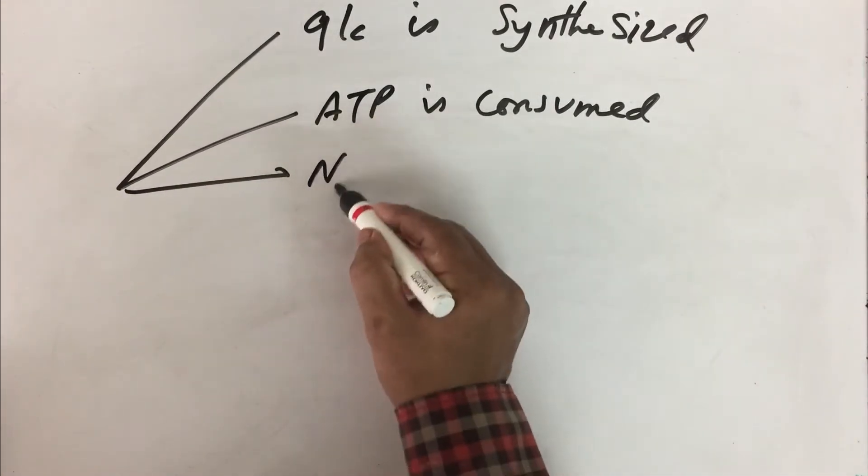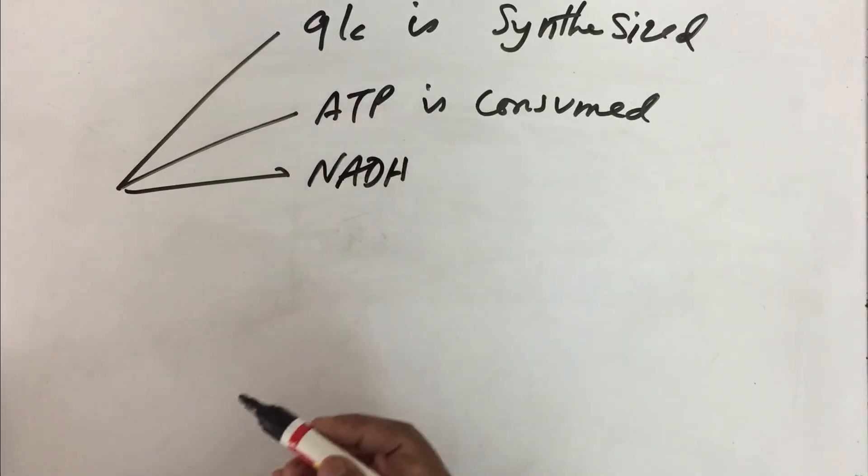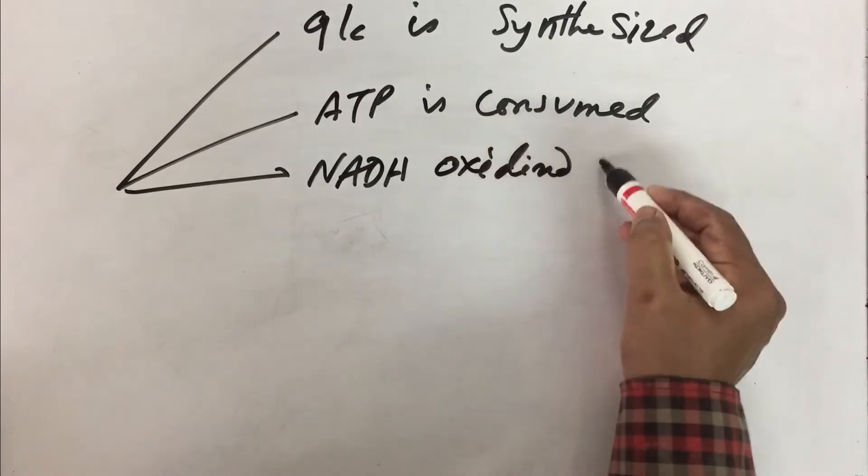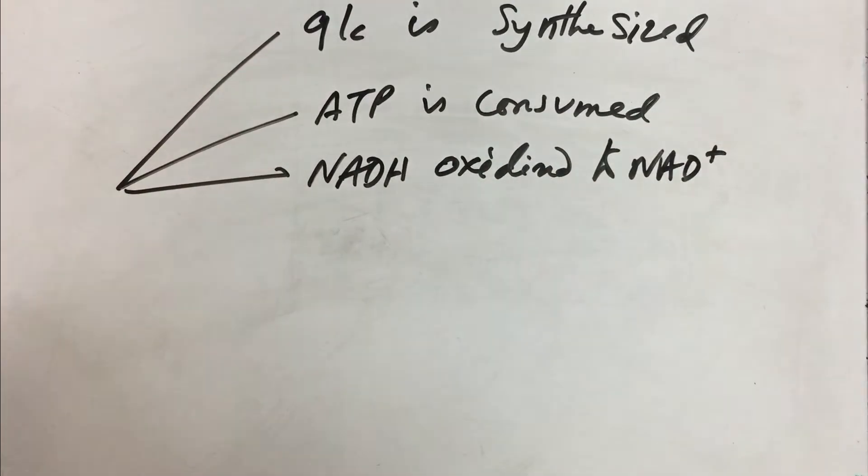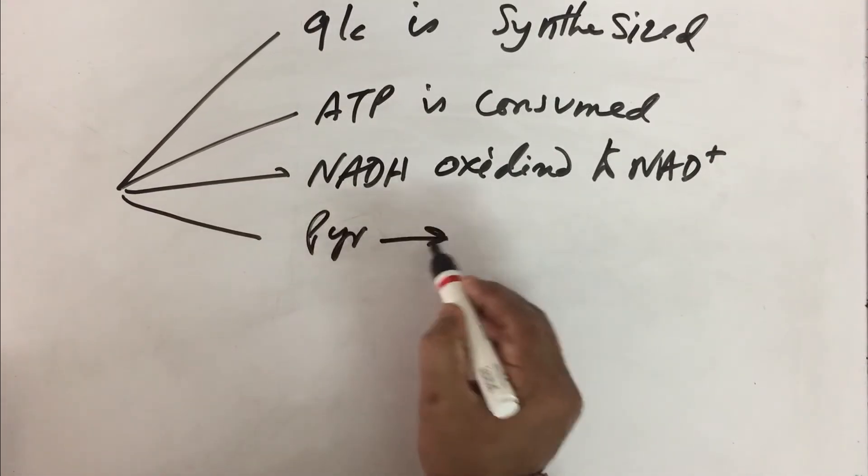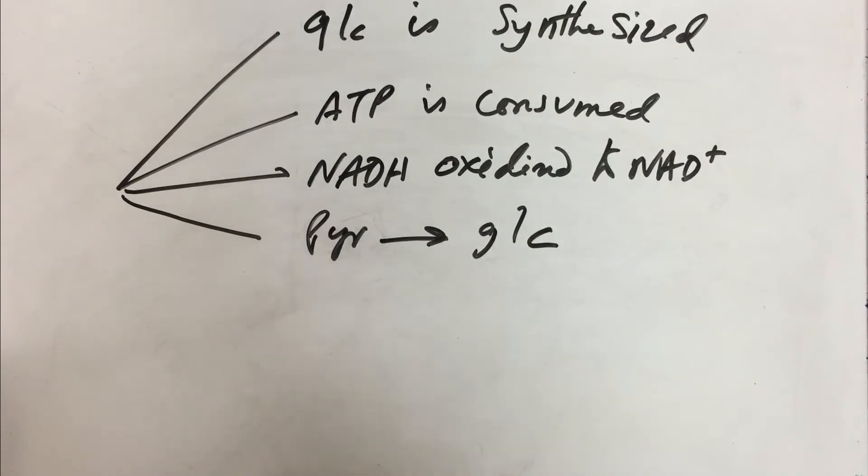The third argument is about NADH. We know that NADH is oxidized to NAD plus. Whereas in glycolysis it was just the reversal. And another argument is pyruvate is converted to glucose. Whereas in glycolysis glucose is converted to pyruvate. These are some of the arguments to show that gluconeogenesis is exactly the reversal of glycolysis.